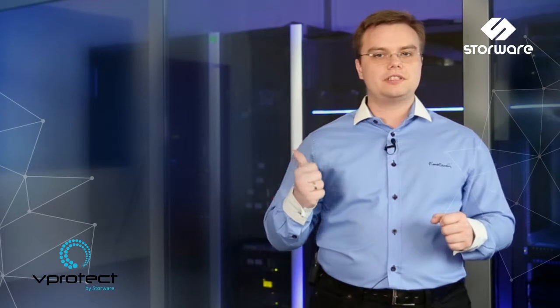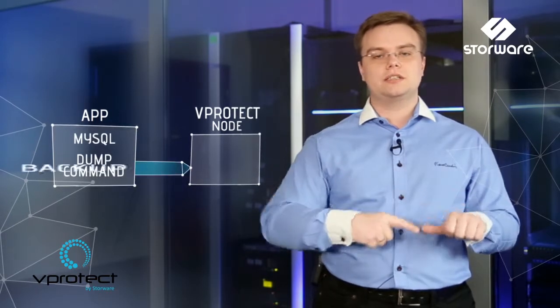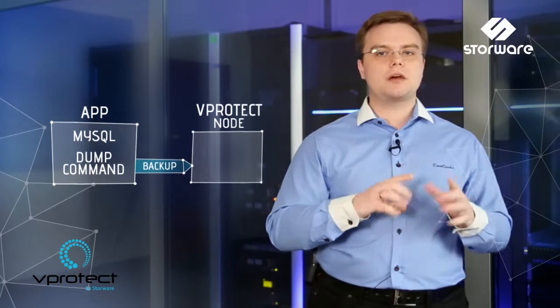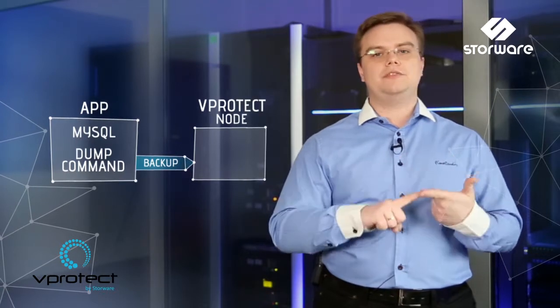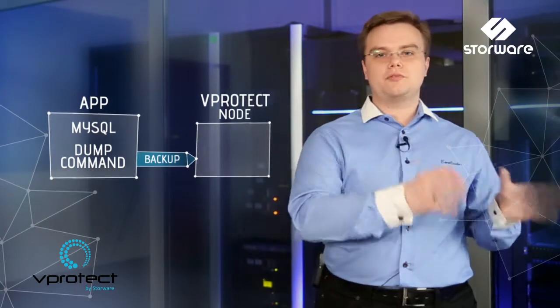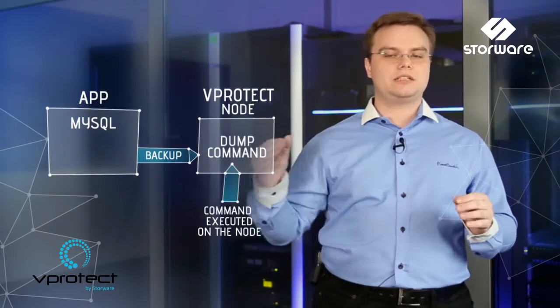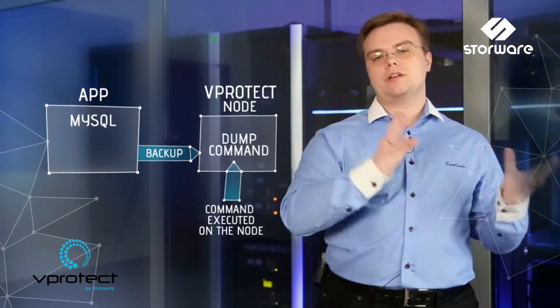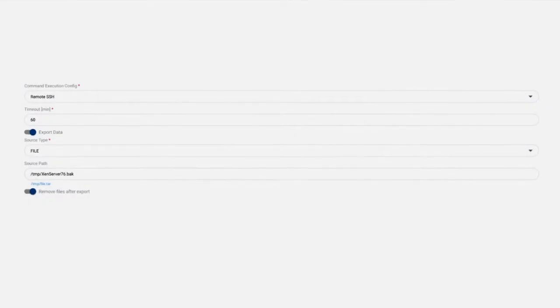Technically in VProtect you have two main things to think of. First, how do you grab your files? Maybe you are using a simple command, a database backup command, or maybe you are just exporting a set of files. This is called command execution configuration. You need to specify how you would like to invoke a specific command and where. It can be invoked either remotely or on the VProtect node. You can put your custom scripts in here and pass custom environmental variables or custom parameters to your script. Then you just need to point to which files or set of files need to be grabbed and stored in a backup provider.